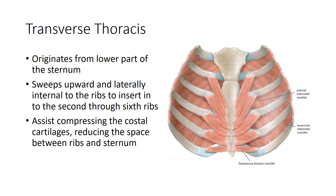The transverse thoracic muscles are a set of muscles that come from the lower part of the sternum on the inside of the thoracic cavity and extend upward and laterally, internal to the ribs, to insert into some of the upper ribs. This muscle works directly to shorten the costal cartilages and draw the ribs toward the sternum, which will reduce the size of the thoracic cavity and therefore compress the lungs.